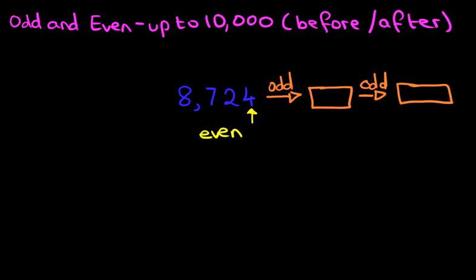Now the question states we have to work out the odd number after this. Well, if this number is even, the next number is odd. How do we know that? Because that is the sequence — when you're looking at even and odd numbers, they go even, odd, even, odd, all the way through to the largest number possible. So if this number is even, we just have to count forward by 1, and that is 8,725. And that is an odd number — we know that because 5 is an odd number.